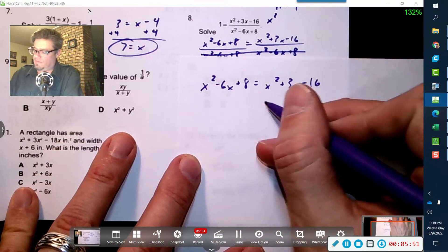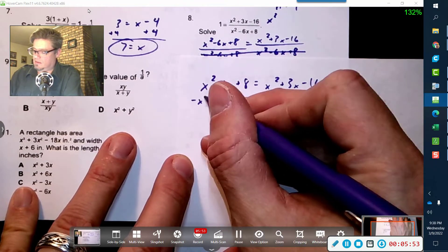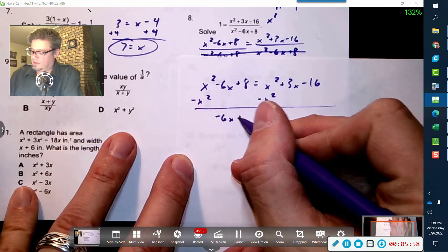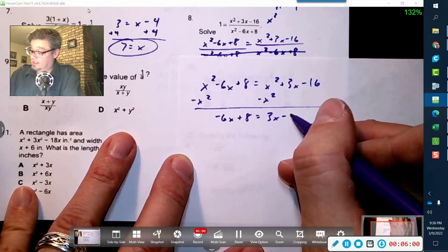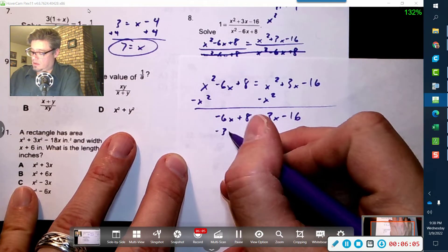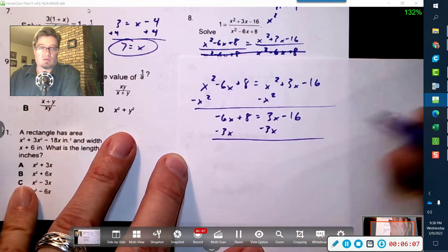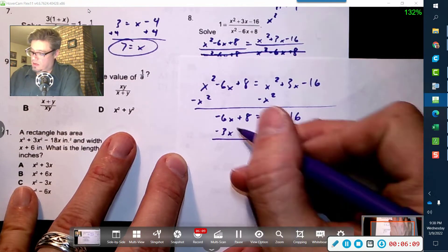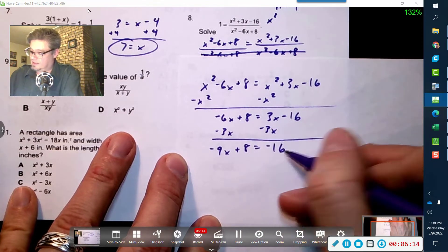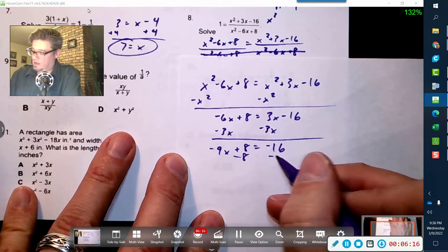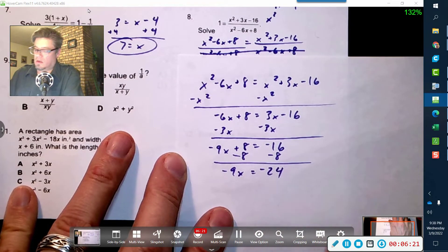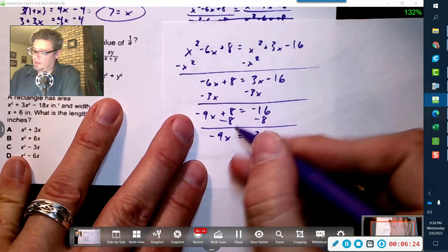So x squared minus 6x plus 8 equals x squared plus 3x minus 16. Notice, if I subtract x squared from both sides, that's gone. Alright, so now we've got negative 6x plus 8 equals 3x minus 16. Let's move the x's over here. You could have moved negative 6 over there, it doesn't matter. So we've got negative 9x plus 8 equals negative 16. We're going to move this guy over to here.